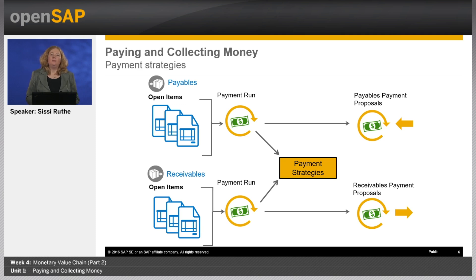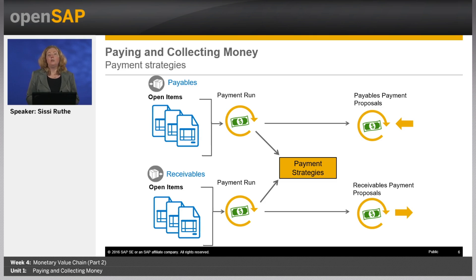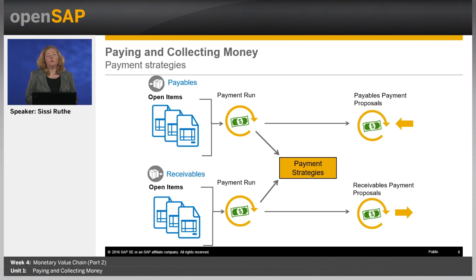Why do we need a payment strategy? Paying without cash discount is quite expensive. Let's assume you have agreed with your supplier on 2% cash discount when you pay in 14 days, or the net amount when you pay in 30 days. In case you pay the net amount after 30 days, you let go an interest rate of 45% per annum. The automatic payment process in SAP Business by Design supports you to ensure that cash discount is taken.